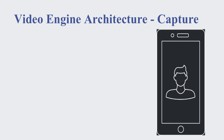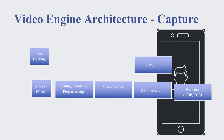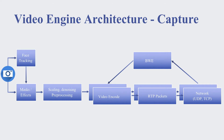Now let's talk about the architecture on the device itself, starting with capture. We have the camera, which is hardware-dependent, and then a component for face tracking, masks, and effects. We use hardware accelerators to minimize CPU usage for this part. Just before video encoding, we have a pre-processing step to improve quality — scaling and denoising. Then we do encoding and pass through the network. In some cases we have more than one encoder, for example with Simulcast, where we have multiple video streams each with different resolution or bitrate. Different participants can receive different streams. We also have feedback from bandwidth estimation to dynamically change the bitrate based on network conditions.